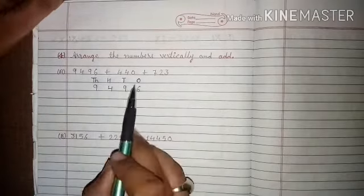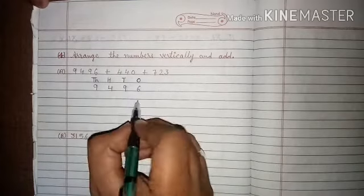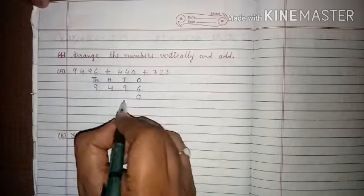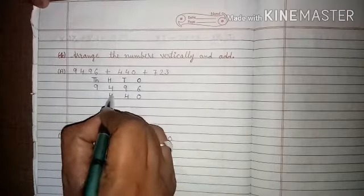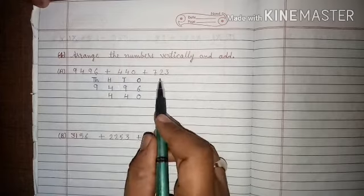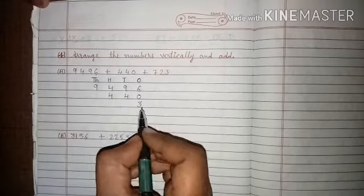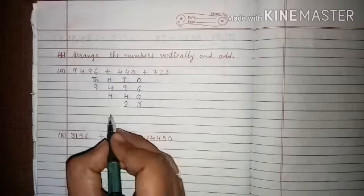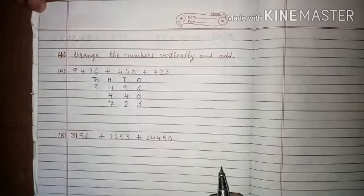Now we look at the second number's digits. Ones place: 0, tens place: 4, hundreds place: 4. After that we arrange the two digits. Then the third number: ones place: 3, tens place: 2, hundreds place: 7. So our three digits are now vertically arranged.